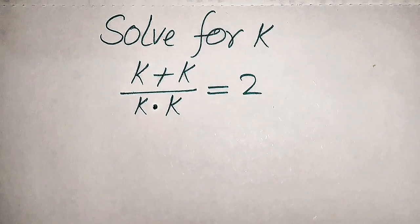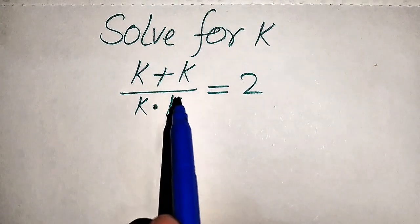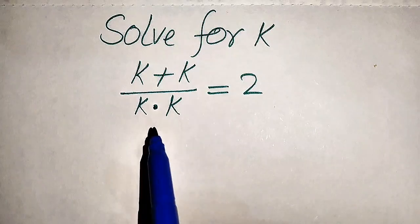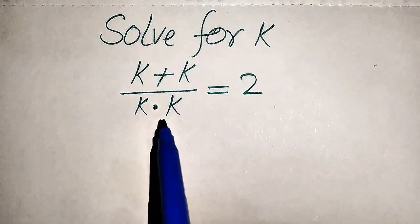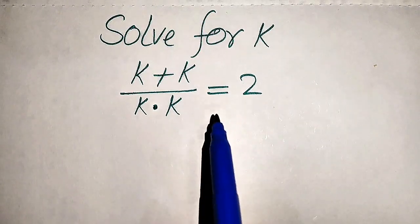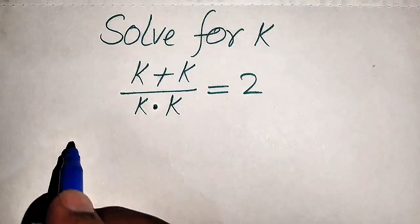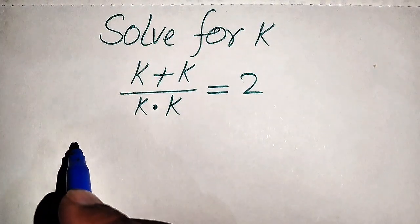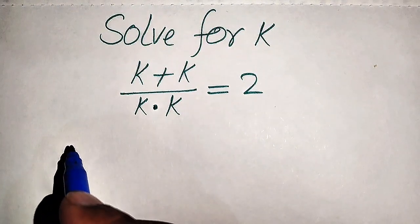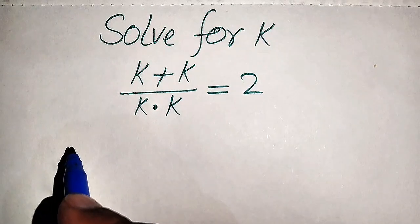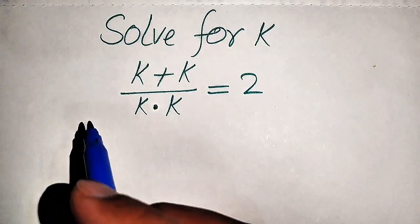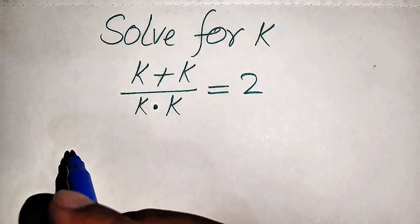Hello everyone. How to solve this problem for the values of k: if we have k plus k divided by k multiplied by k equals 2, and we solve this problem for all the values of k. First we need to find all the roots of this equation, and at the end we will verify which of the roots are solutions and which of the roots are extraneous roots.